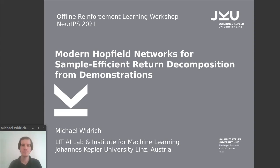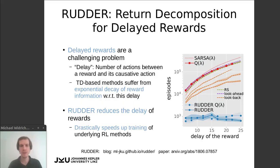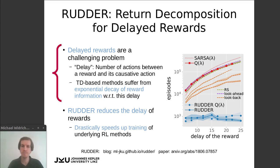In reinforcement learning, especially in real-world applications, we often have to deal with delayed reward problems. For example, you do something now and only later you get the reward for it. Such delays, especially if they are long, are problematic. For example, TD-based methods suffer from exponential decay of the reward information over this delay.